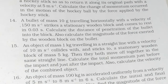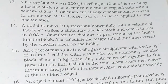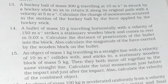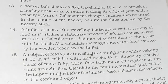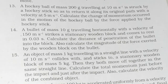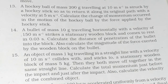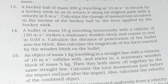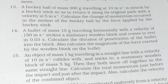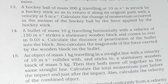Coming to Question 14: A bullet of mass 10 grams traveling horizontally at 150 meters per second strikes a stationary wooden block and comes to rest in 0.03 seconds. Calculate the distance of penetration of the bullet into the block, and also calculate the magnitude of the force exerted by the wooden block on the bullet.